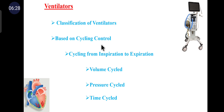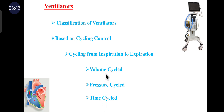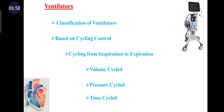Classification based on cycling control: the cycling control determines the change from the inspiratory phase to the expiratory phase and vice versa. For inspiration to expiration, it is based on volume cycle, pressure cycle, and time cycle. In a volume cycle ventilator, the expiratory phase begins after a preset tidal volume has been delivered into the patient circuit. A pressure override valve ensures that if pressure exceeds a predetermined maximum, the ventilator will cycle regardless of whether the set volume has been administered.